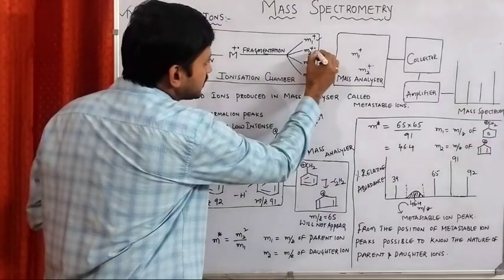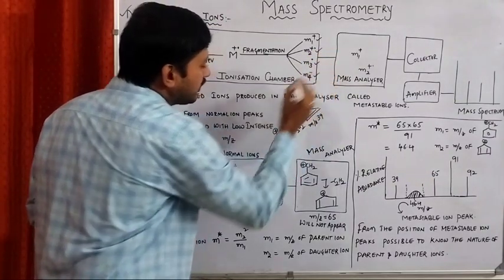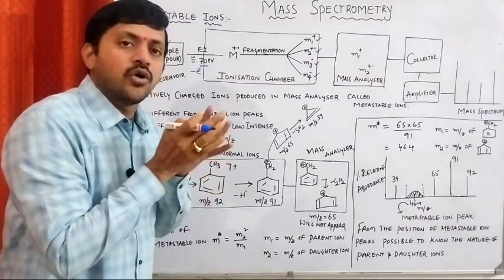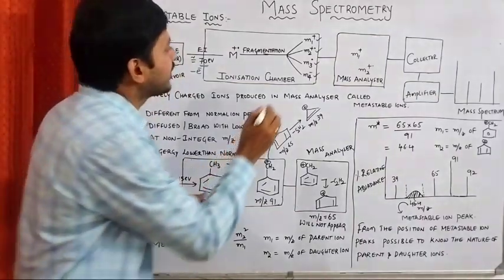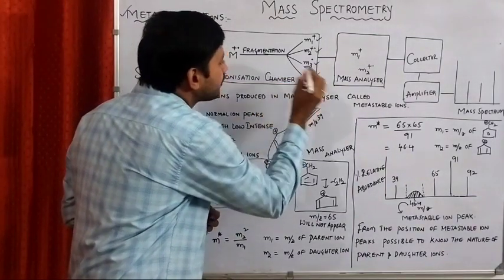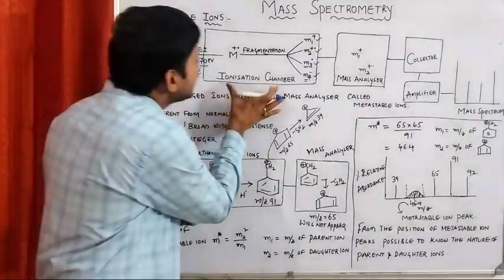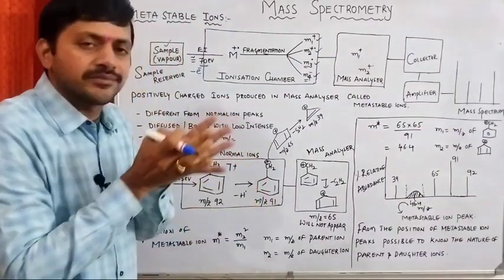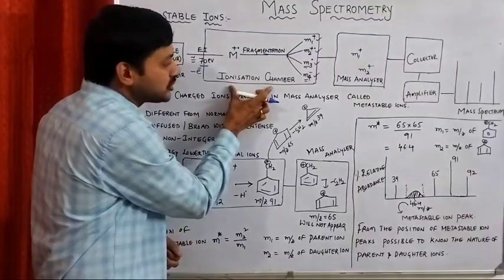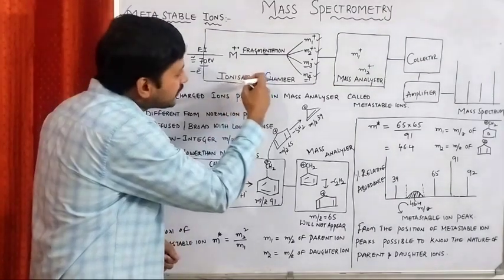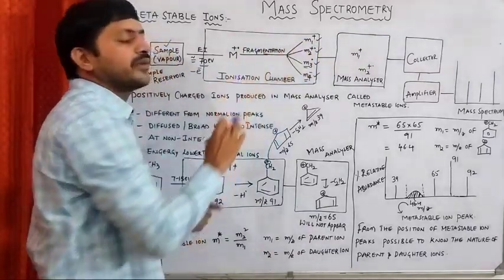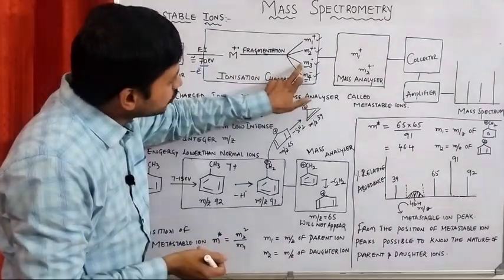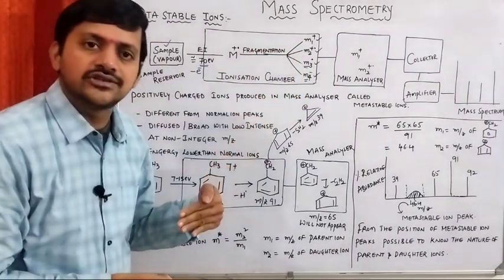During the fragmentation procedure, we get positively charged species, radical cations, radicals, and negatively charged species. The mass spectrometer identifies only positively charged ions, so radicals and negatively charged ions are removed from the ionization chamber. The formation of molecular ions and fragment ions takes place in the ionization chamber. Ions the instrument does not recognize are removed from the ionization chamber.